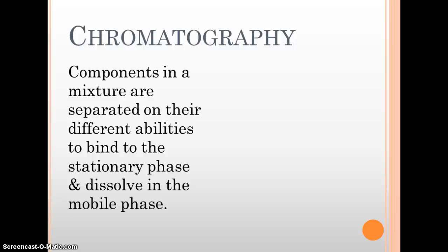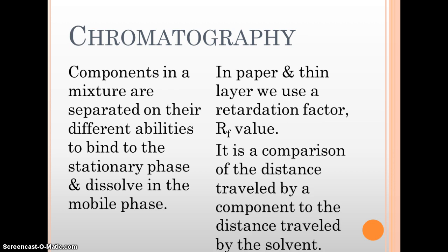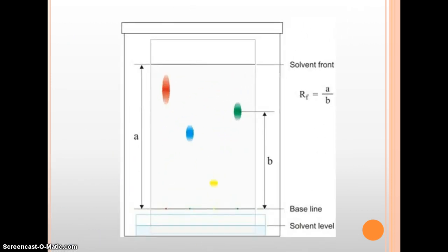With paper and thin layer chromatography, we use what's called a retardation factor or an RF value. And it's basically a measurement comparing the distance traveled by a component of the mixture to the distance traveled by the solvent. So how far did one of your mixture pieces move versus how far did the solvent move? So that difference is going to be the RF value.